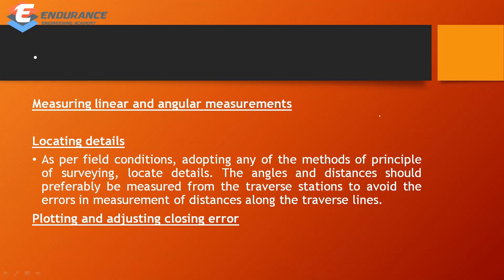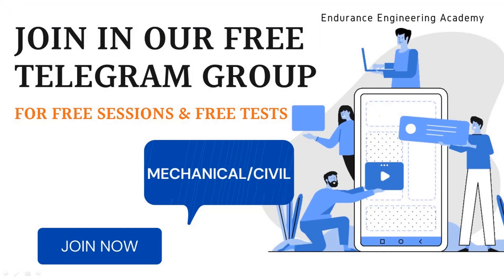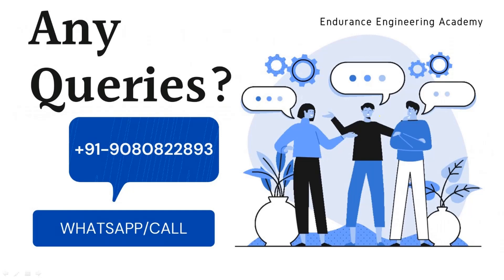The next steps include measuring linear and angular measurements, locating details, plotting and adjusting closing errors. This video covers a significant part of the field surveying syllabus — around 60% in 2 to 3 parts, and about 40% is in draws. For updates, join the Telegram or WhatsApp group; the link is in the description. If you have any queries, WhatsApp us. Thank you, see you in the next video.